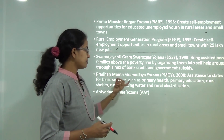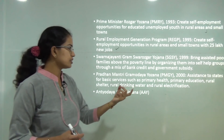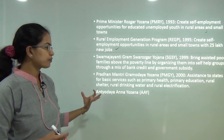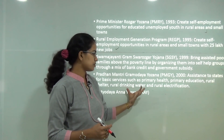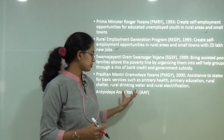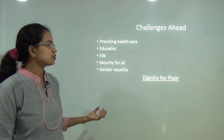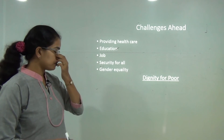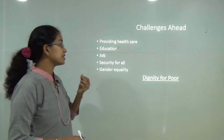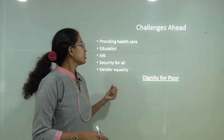The Pradhan Mantri Gramodaya Yojana (2000) provided basic health and primary education facilities, followed by the Antyodaya Anna Yojana and others. Despite the many measures taken, many challenges remain — providing healthcare to everyone at an affordable price and providing free and compulsory education from primary to college level are still ahead.